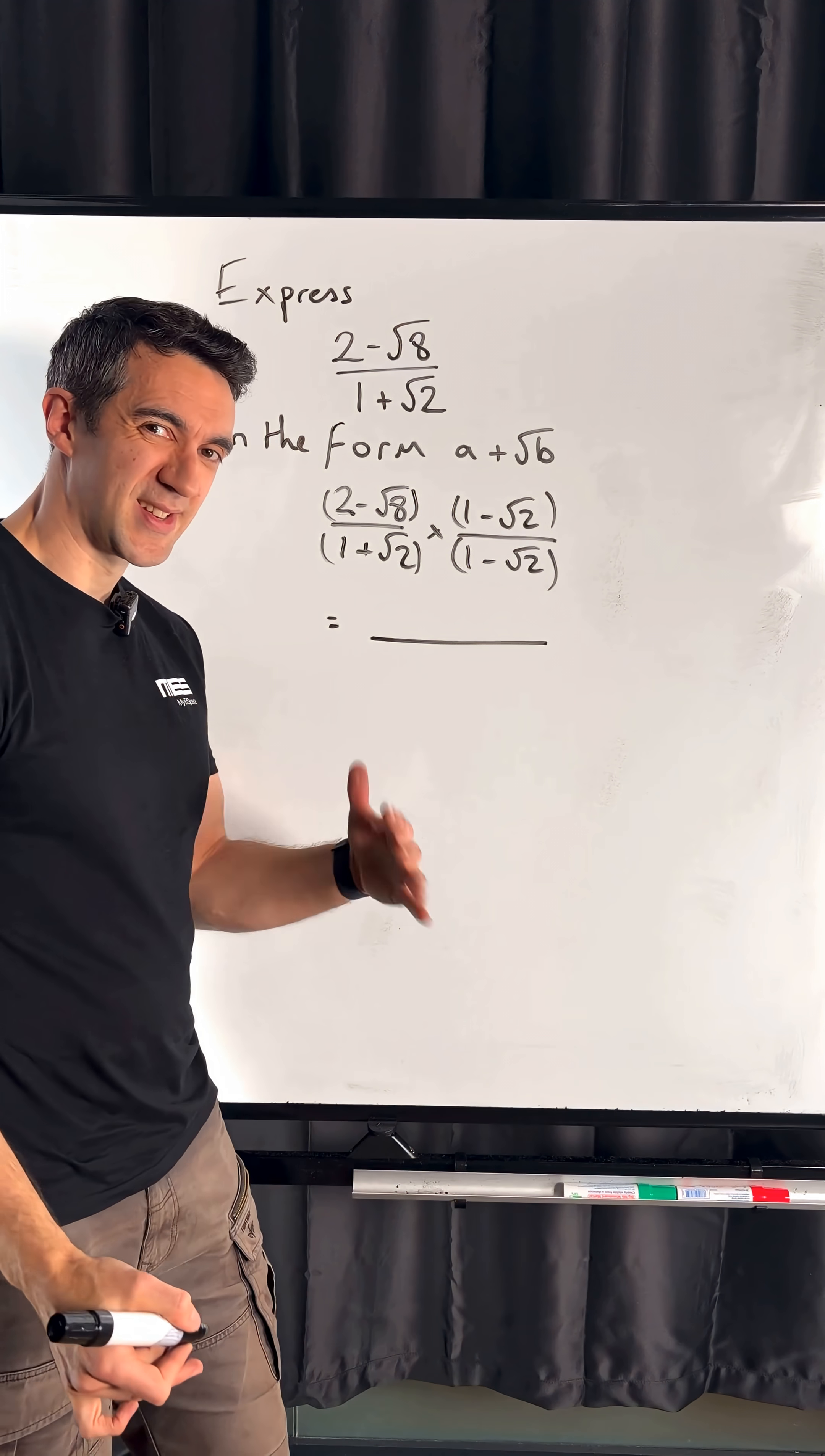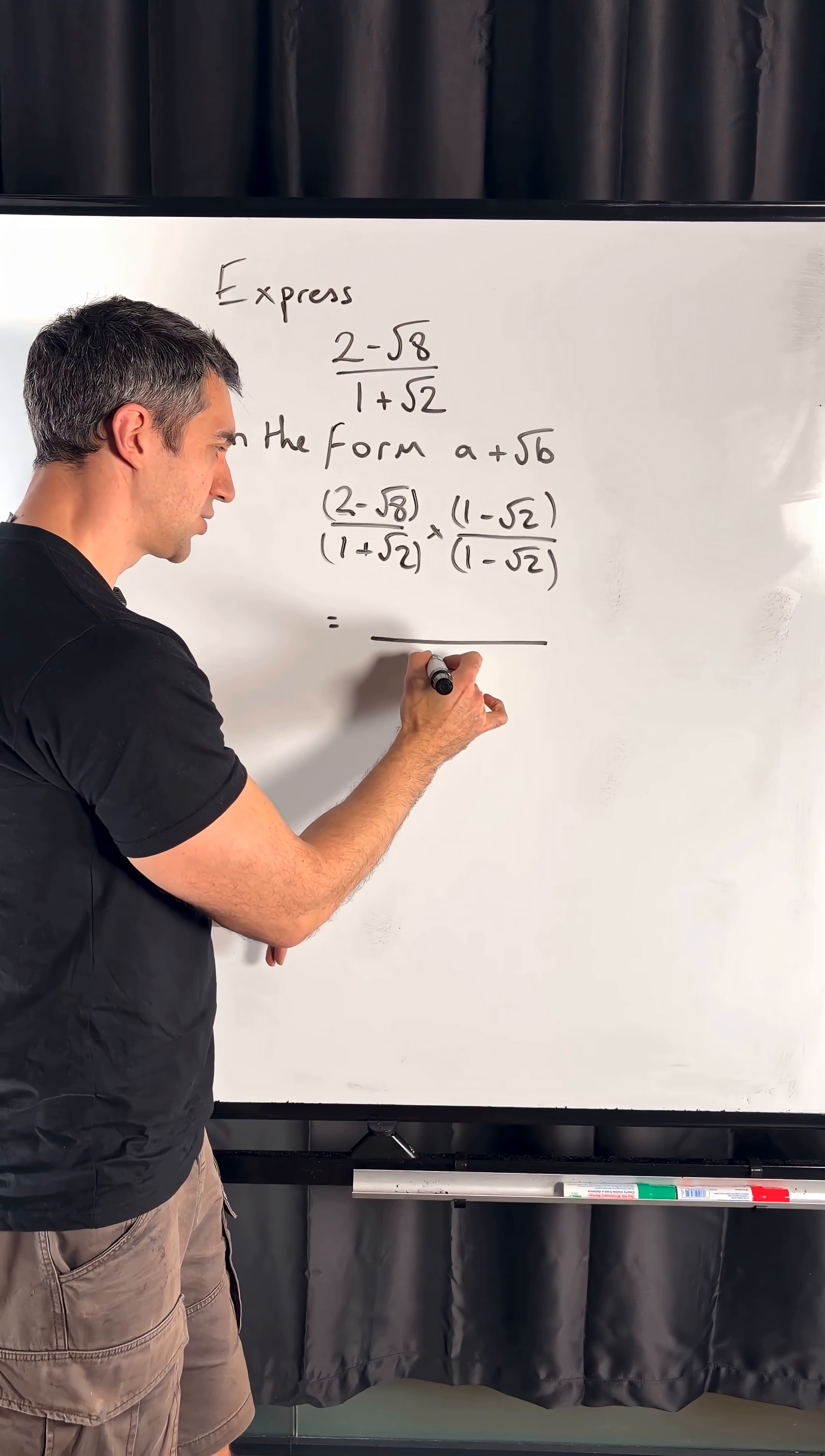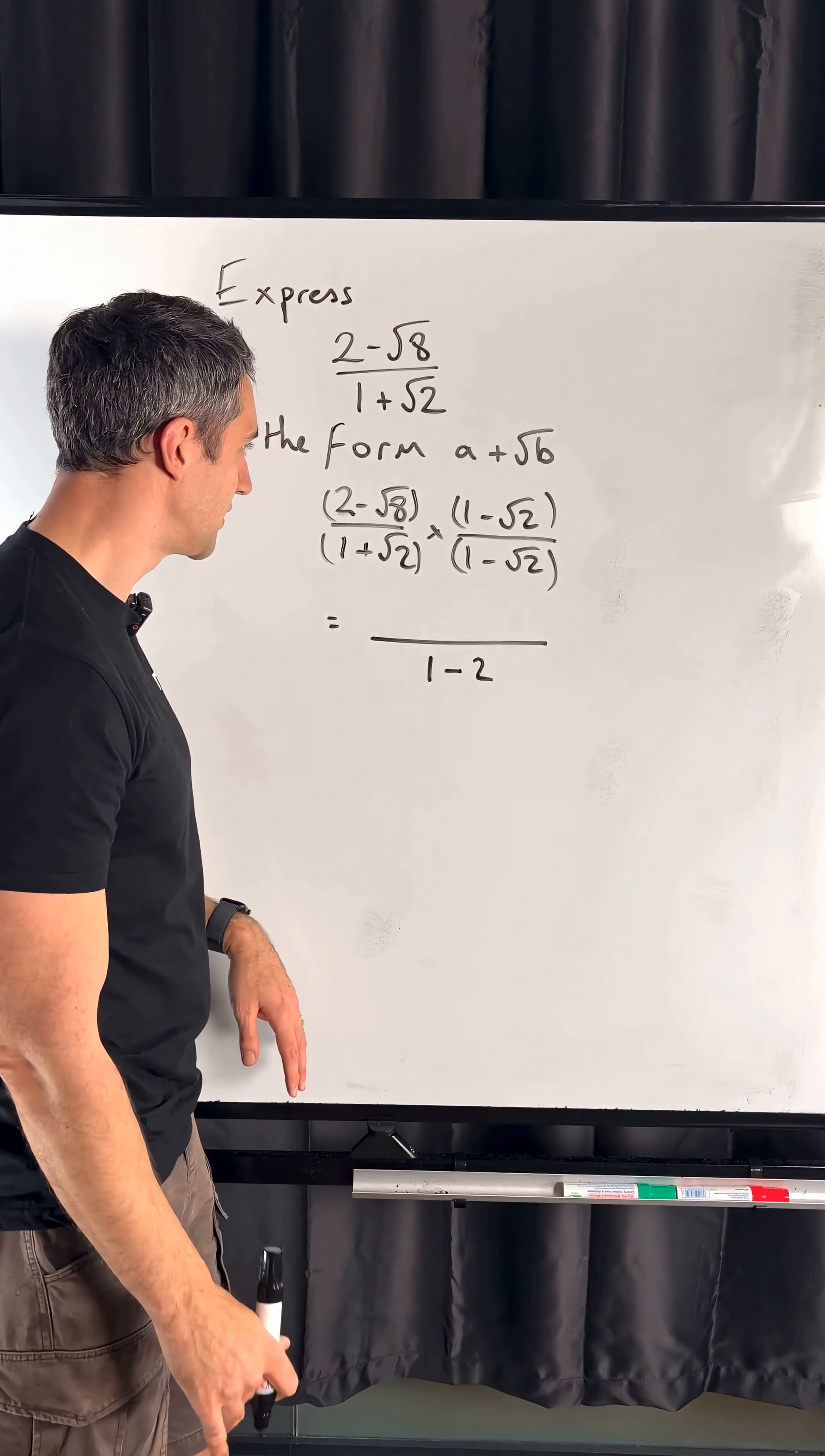Okay, so I'm going to start with my denominator because that's meant to be the easy bit. So I get my difference of two squares: 1 plus root 2, 1 minus root 2 means it's just 1 squared minus root 2 squared, which is just 1 minus 2. Right, nice and quick, simple to do for our denominator.